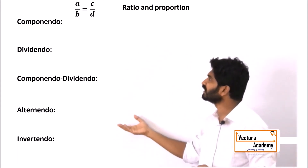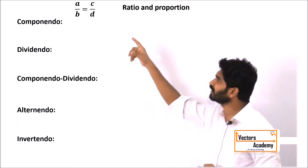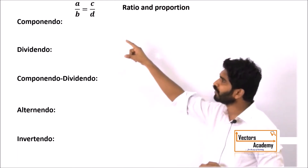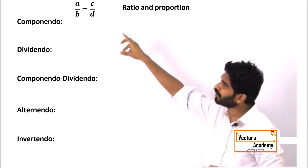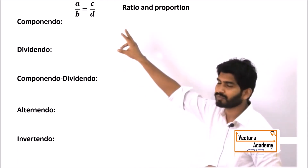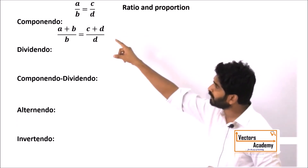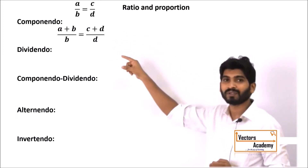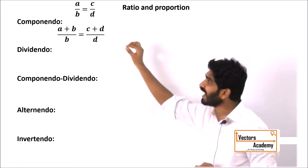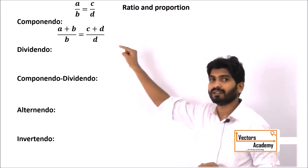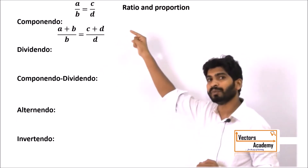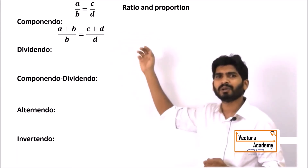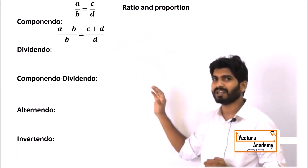Let us have a look at these. By Componendo, what happens is if you apply componendo on both sides of the ratio, you add the denominator to the numerator: you get A plus B upon B is equal to C plus D upon D. This is how we apply the Componendo property.